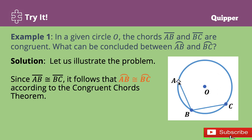This is the line segment AB and line segment BC. So this is the common point, and these are the two chords. Since line segment AB and line segment BC are congruent, it follows that their intercepted arcs — arc AB and arc BC — are also congruent. That's according to the congruent chords theorem: if the two chords are congruent, then their intercepted arcs are also congruent.